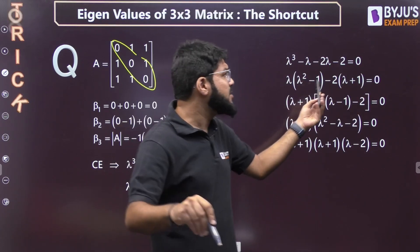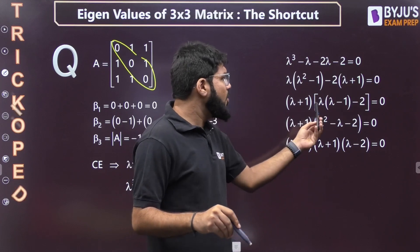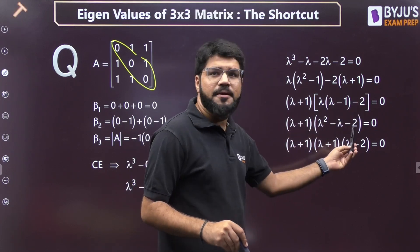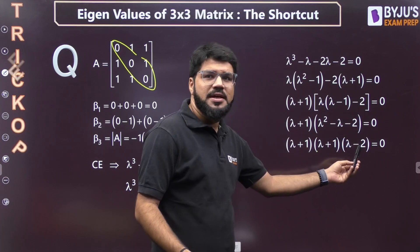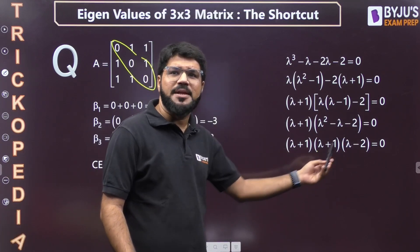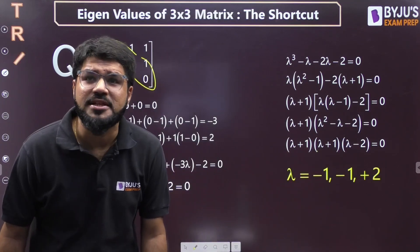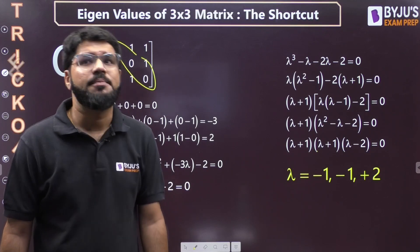λ² - 1 is (λ - 1)(λ + 1), so take (λ + 1) common. The inner term becomes quadratic, which you can solve by formula or factorize. Ultimately you get (λ + 1)(λ + 1)(λ - 2) = 0, so λ is -1, -1, and +2. These are the three eigenvalues.